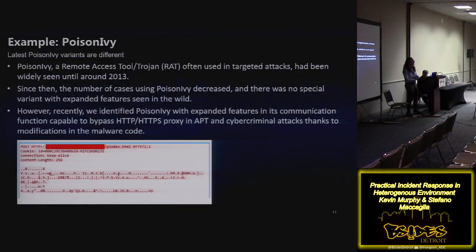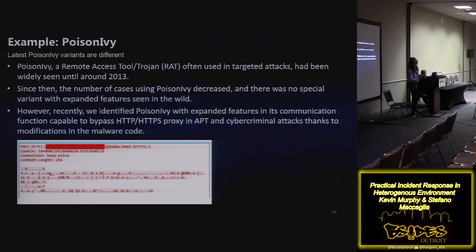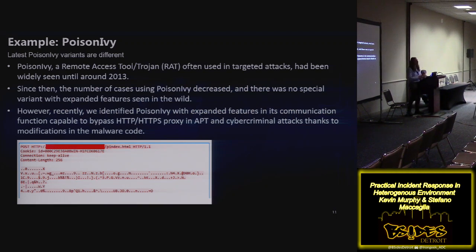One example is Poison Ivy. Everybody in the IR field knows Poison Ivy. It's not really an APT-related tool — more a cybercriminal tool — but in the past, APT groups tended to use what was reliable, and Poison Ivy was a reliable RAT, definitely one of the most well-coded in the past. Up to 2013, many attackers were using it. It's difficult to attribute Poison Ivy use to one specific APT group since many use it — like Mimikatz, you can't attribute just by finding it in a system.